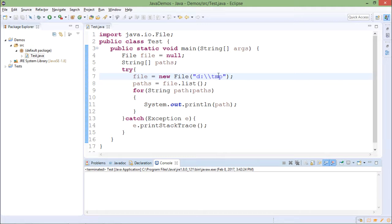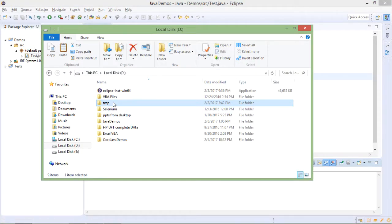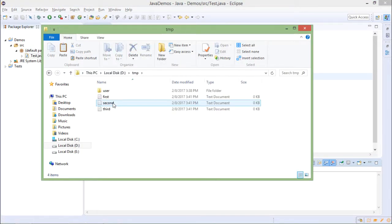So I have one tmp directory on D drive. Here tmp directory is there. Inside tmp directory I have user as subdirectories and a few files are there. So these are the contents of tmp directory.